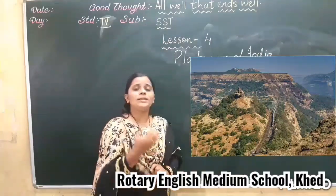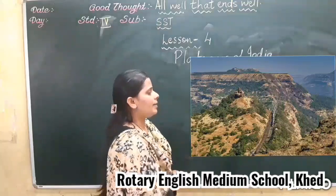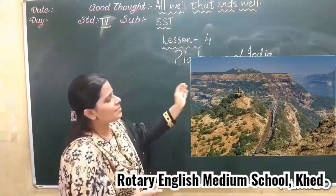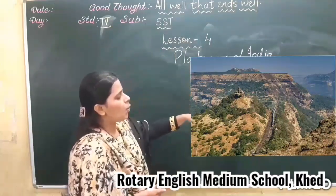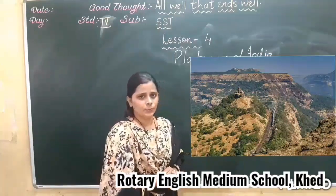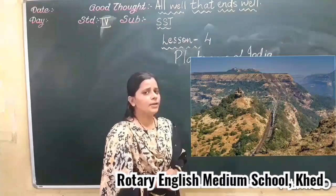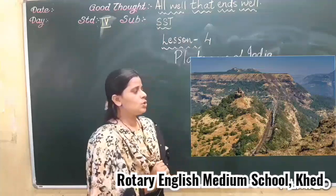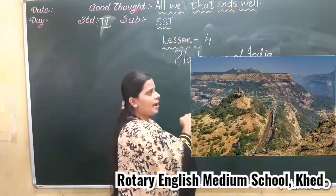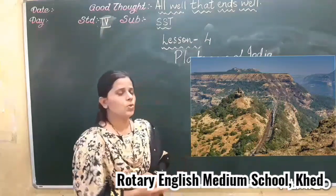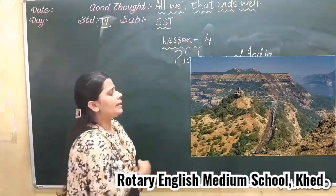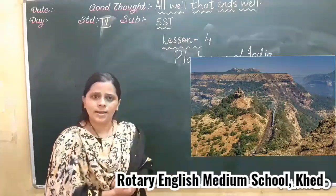In your book, the definition given about plateau is: a raised area with steep slope and flat top is called a plateau. In simple words, land which is flat and higher than its surrounding area is known as a plateau. This area is also rocky and is called table land.